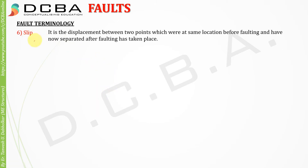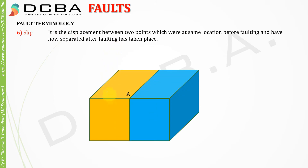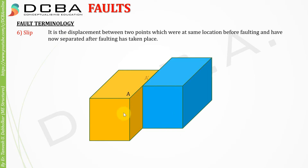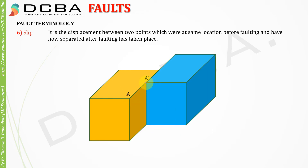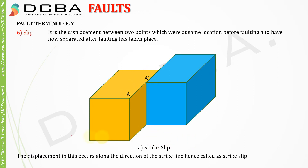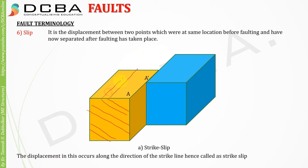Slip is the displacement between two points which were at the same location before faulting and have now separated after faulting. If these are the two blocks, after faulting point A moves to a new position — this displacement is called a slip. Strike slip: the displacement occurs along the direction of the strike line. If this is a bedding plane, the strike direction runs along it, and since the slip is happening along that direction, it is called a strike slip.